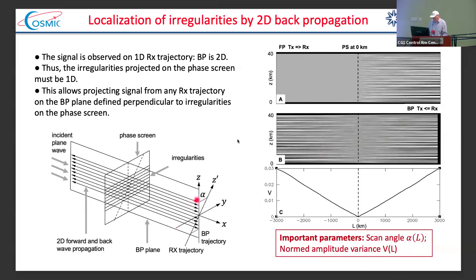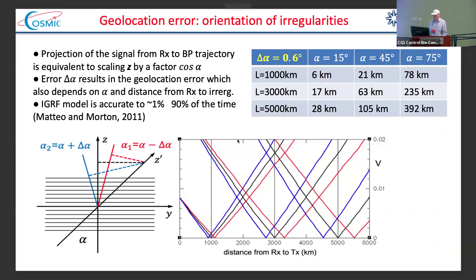The scan angle alpha is the most important parameter in this technique, and the normalized amplitude variance is the main metric. If we don't know the scan angle alpha, we may get very large errors of localization by backpropagation. Here we estimate the error of geolocation related to the uncertainty of that angle. We take the smallest estimate based on the accuracy of the IGRF model, which is about 1%. Even with this very small estimate, at small distances to irregularities and small angle, the accuracy is very good, but at large angles and large distances it can be very large — hundreds of kilometers.